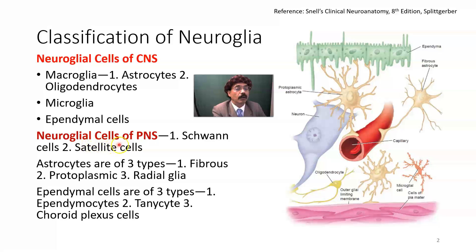We also have microglia — phagocytic cells derived from bone marrow monocytes. In the peripheral nervous system, we find the Schwann cell and the satellite cell.